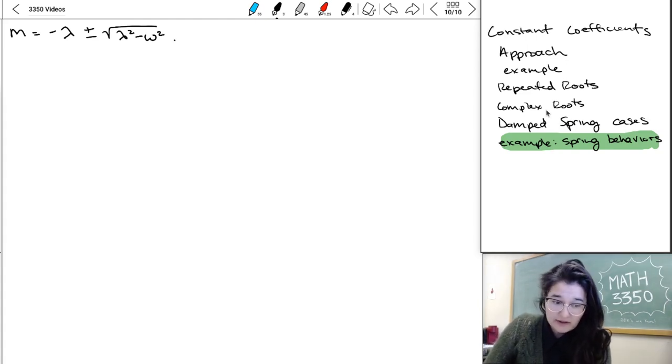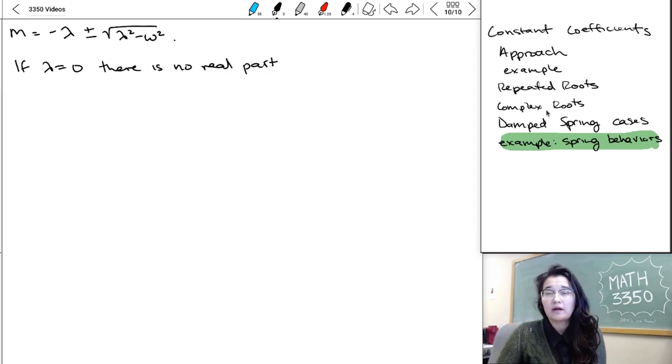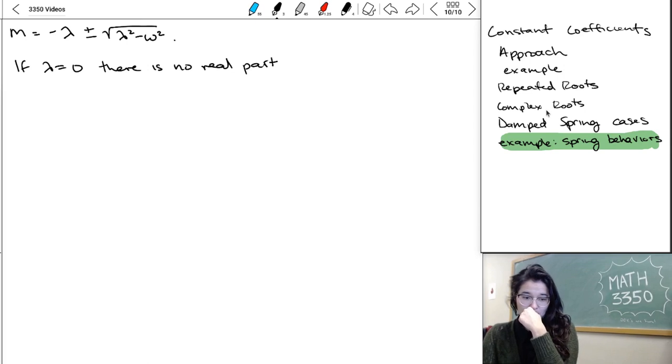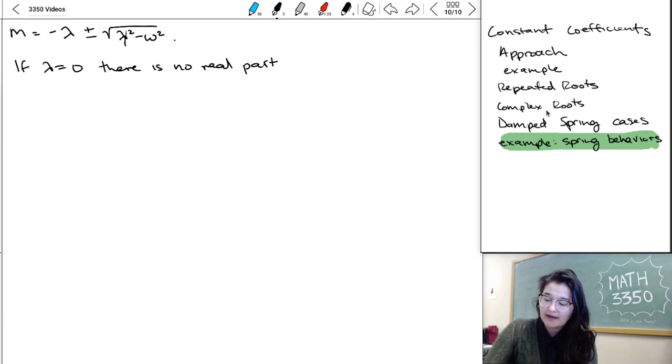So the easiest one to think about is if lambda equals zero, there is no real part. So the part out front goes away. And then in here, we get zero minus omega squared. So negative something squared gives us an imaginary number.